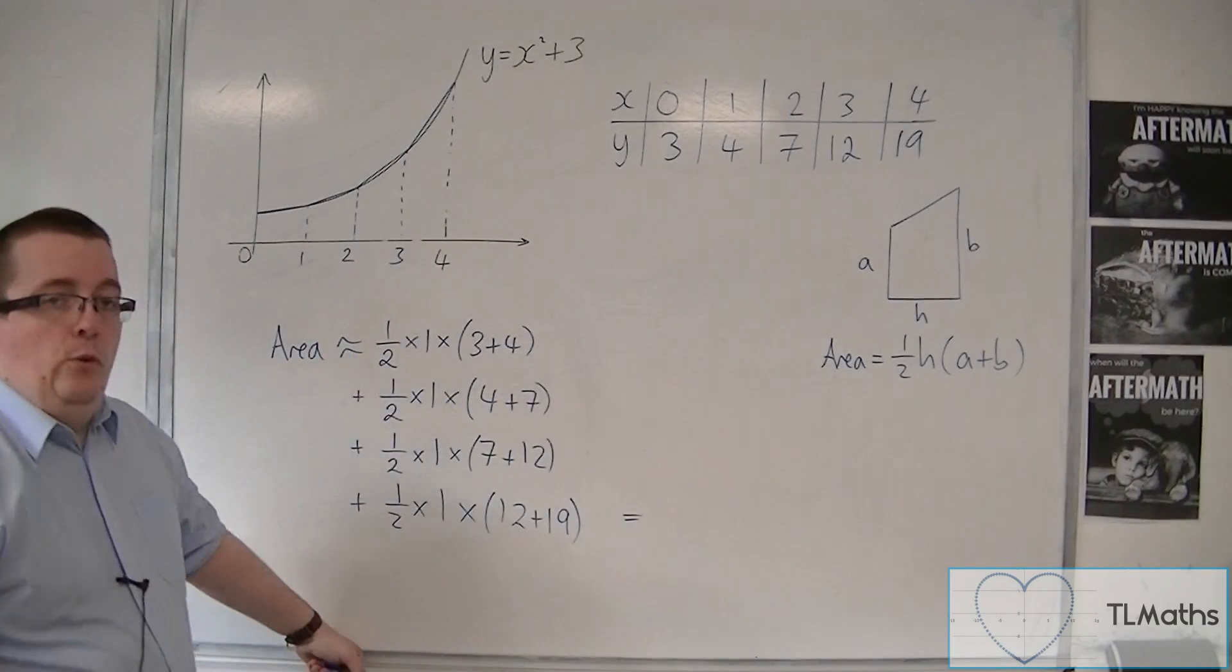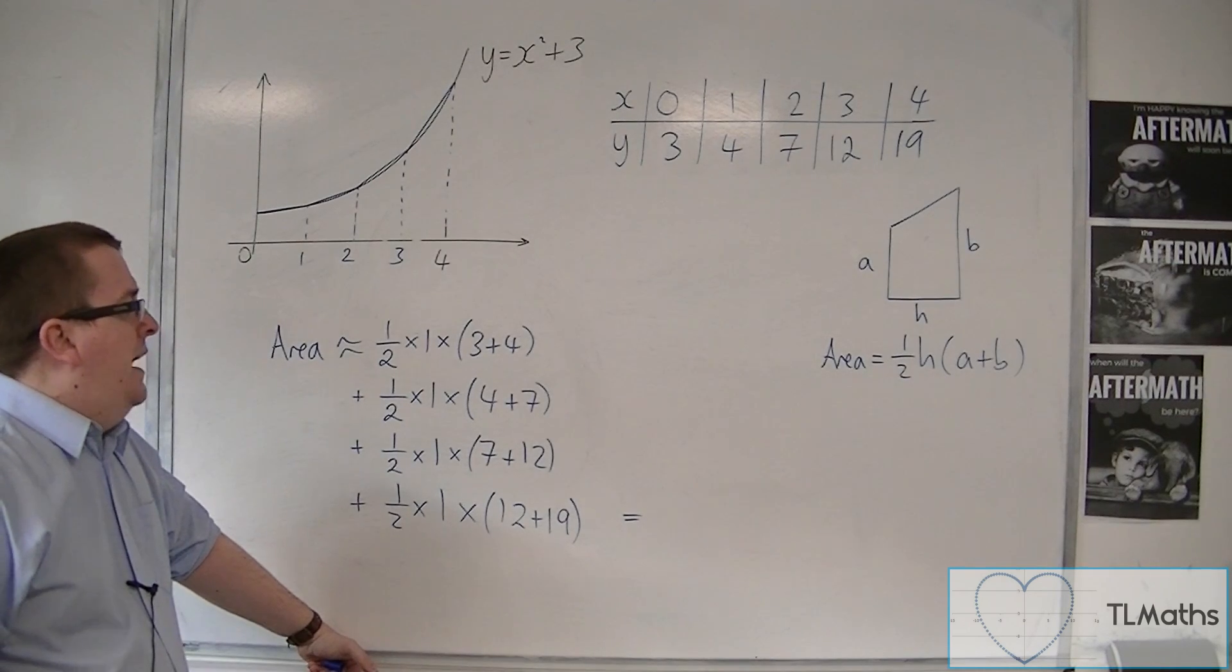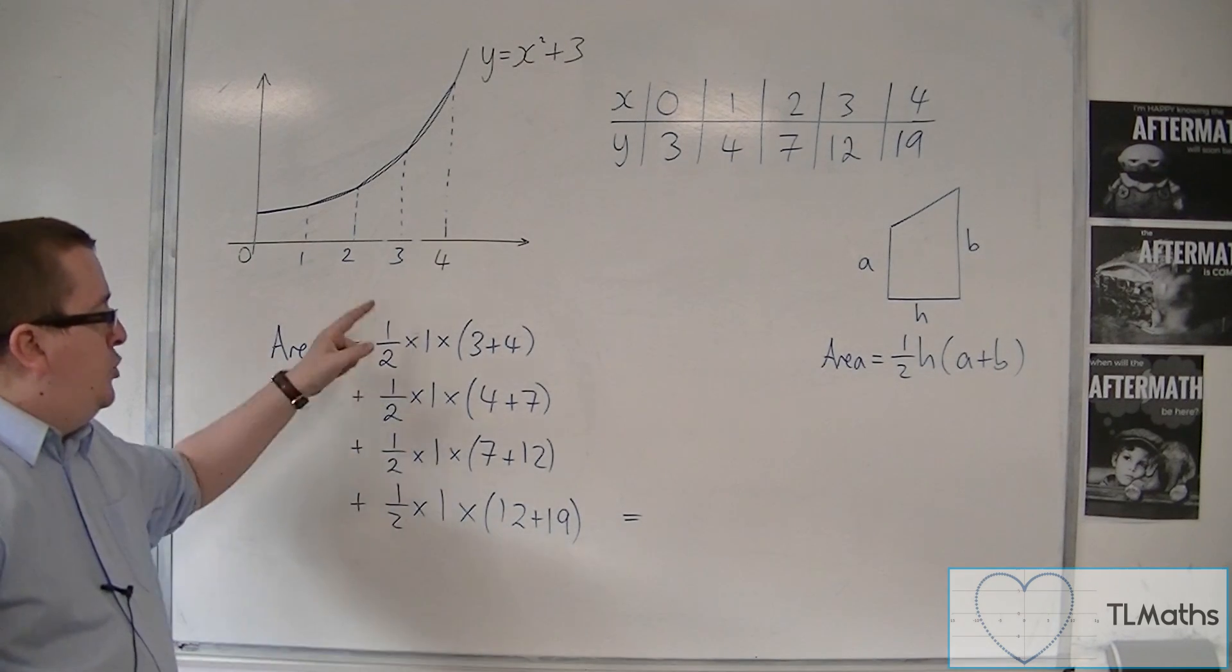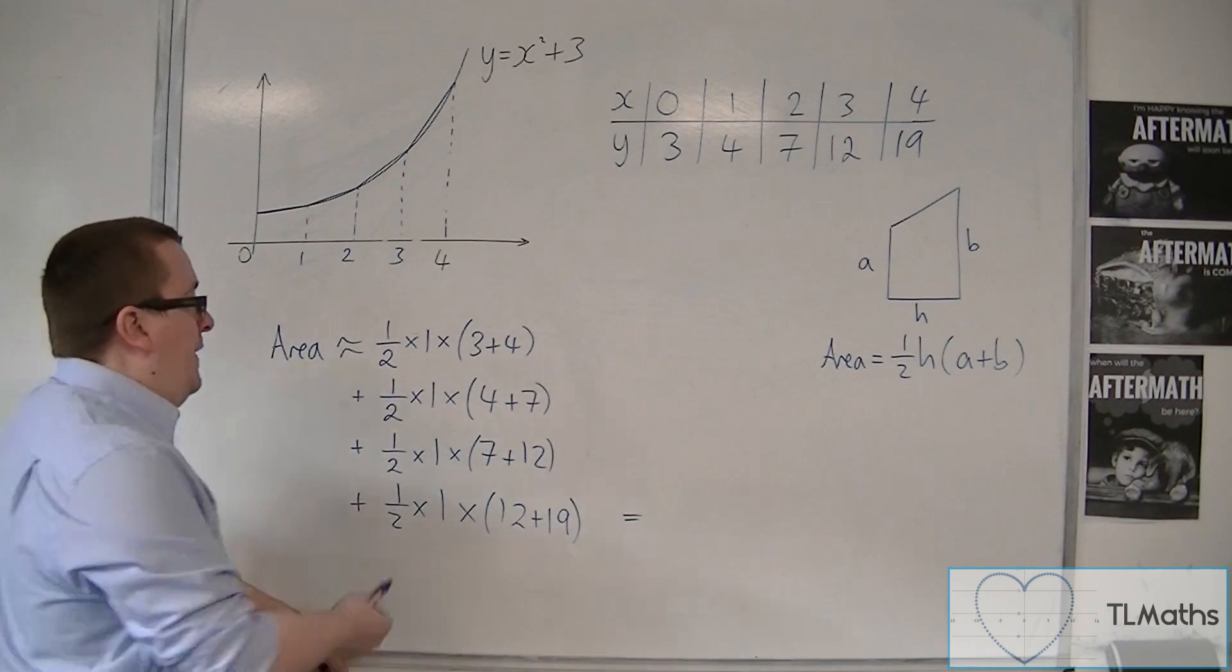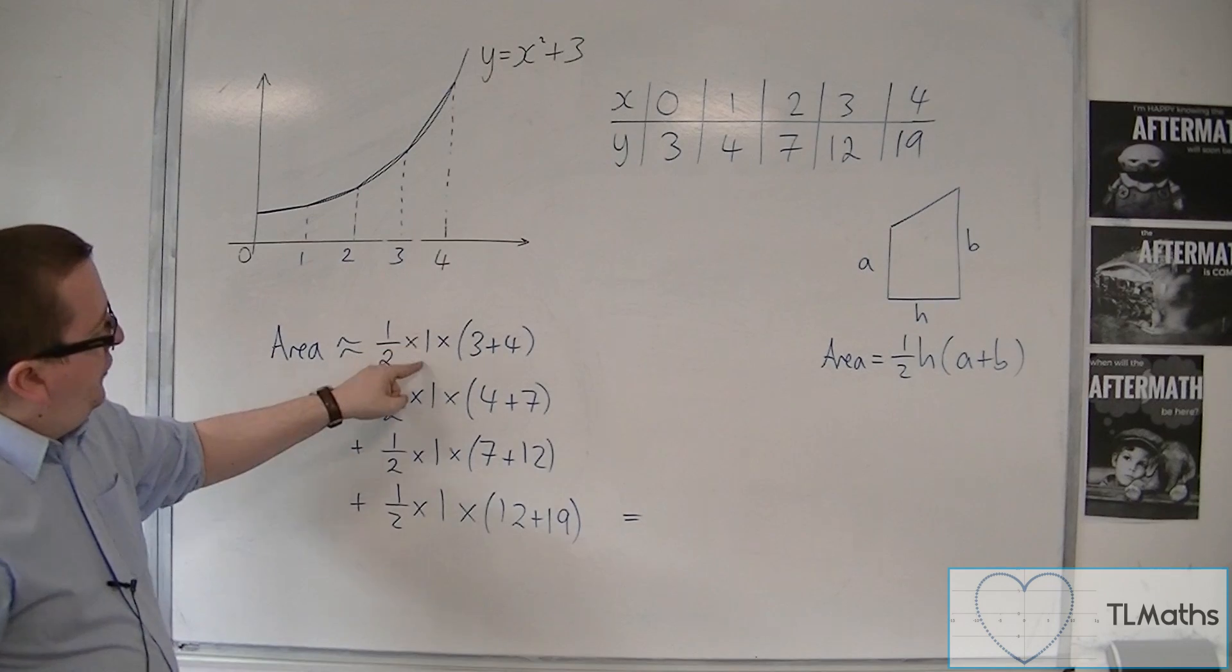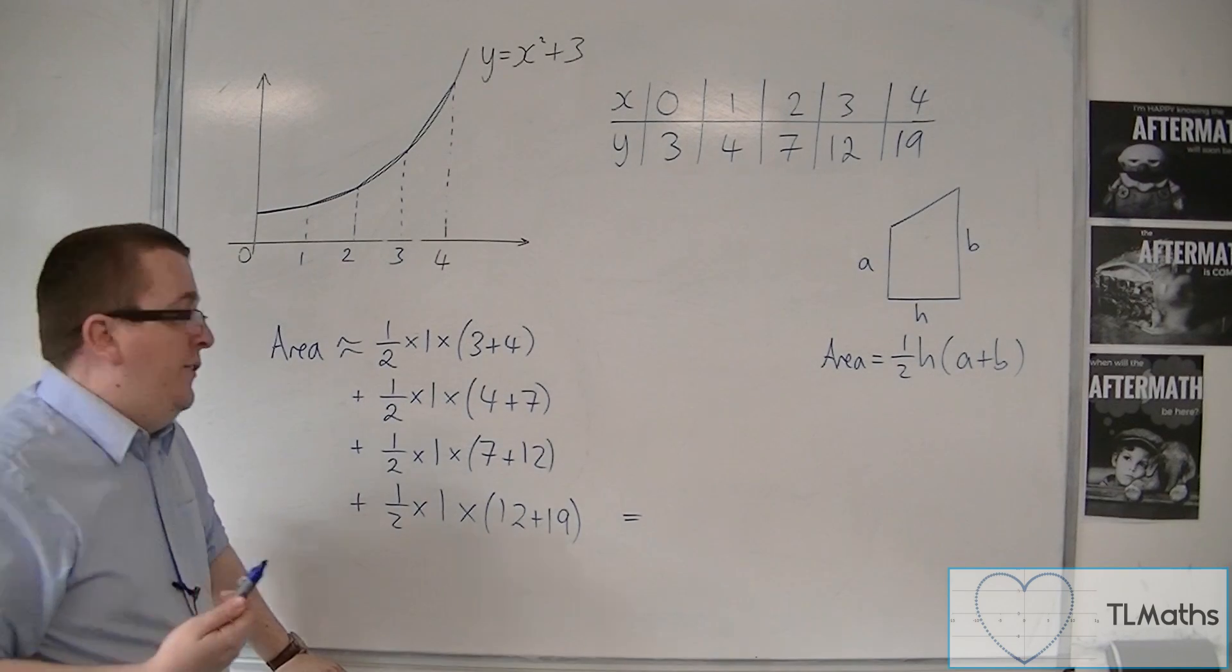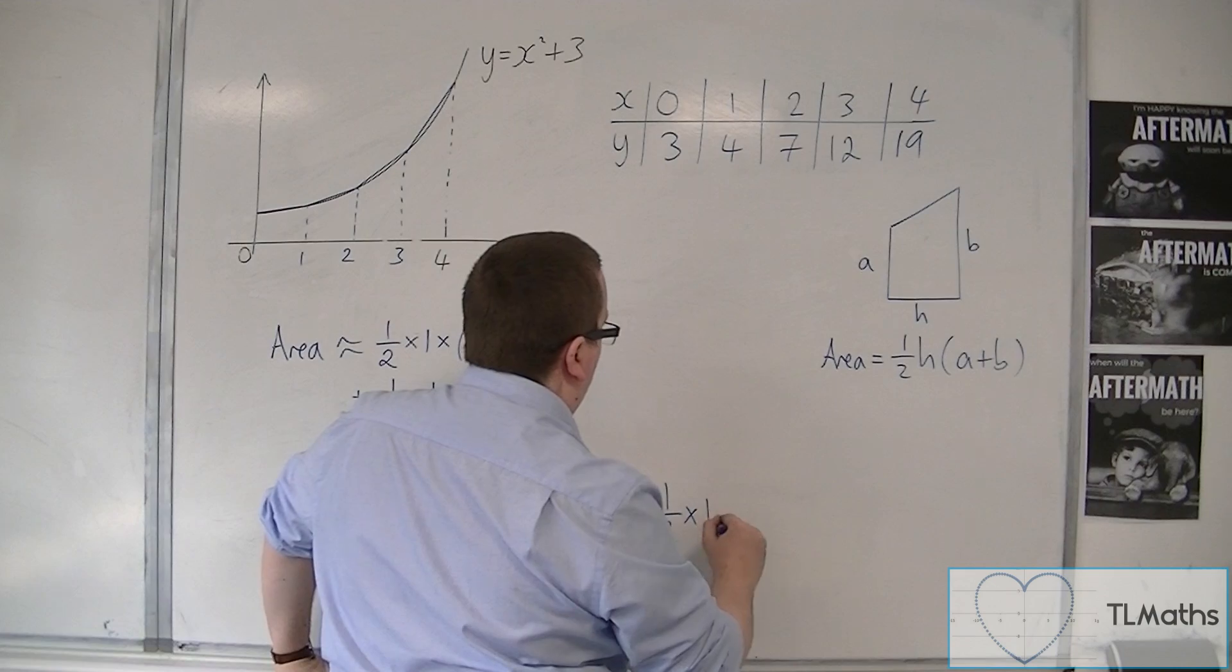Now, if I add those all together, I will get my area. Now, what you should notice here is that in each of these cases, I've got some similarities. I've got the fact that I've got a half out the front of each of them. And I've also got the same strip width. So I could factor those bits out. I could factor out the half, and I could factor out the 1.